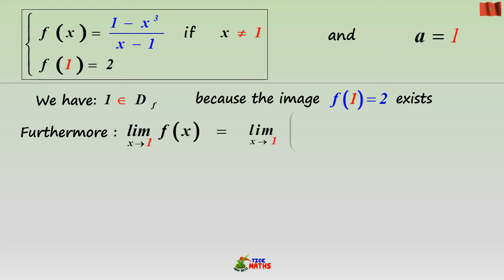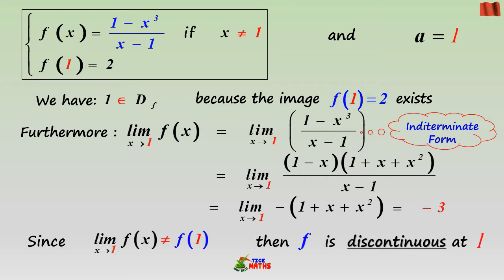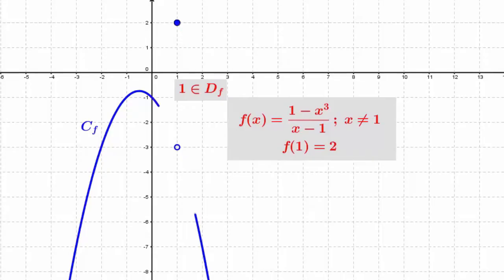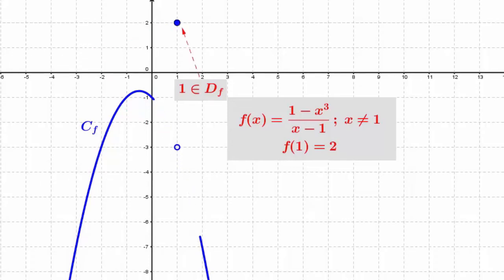Now, the image of 1 exists, and the limit at 1 exists too. But unfortunately, they aren't equal, which makes a hole and a level gap for the graph at 1.